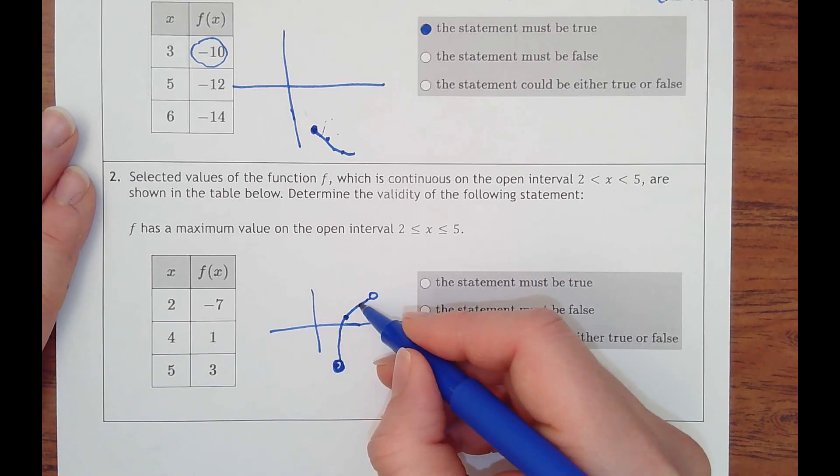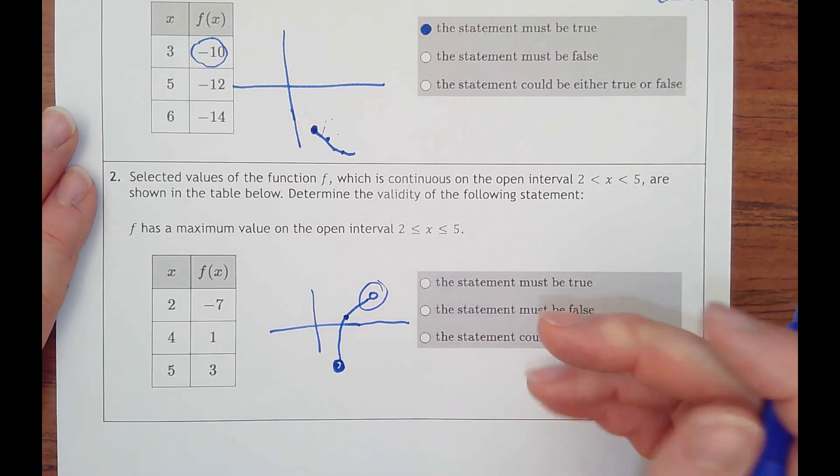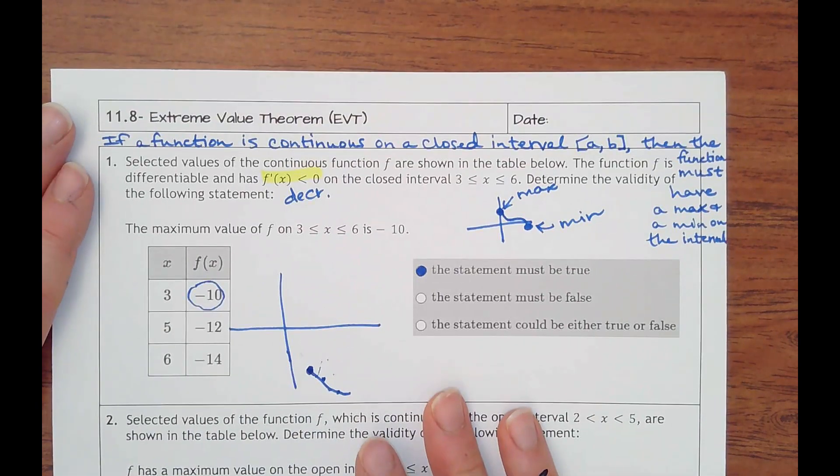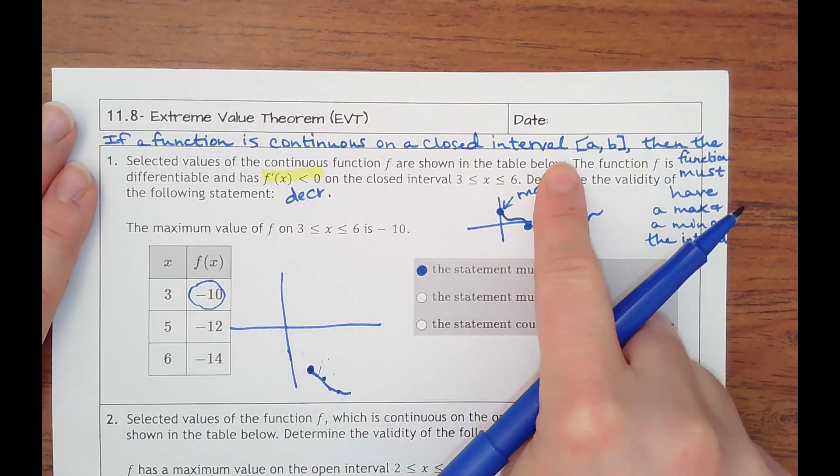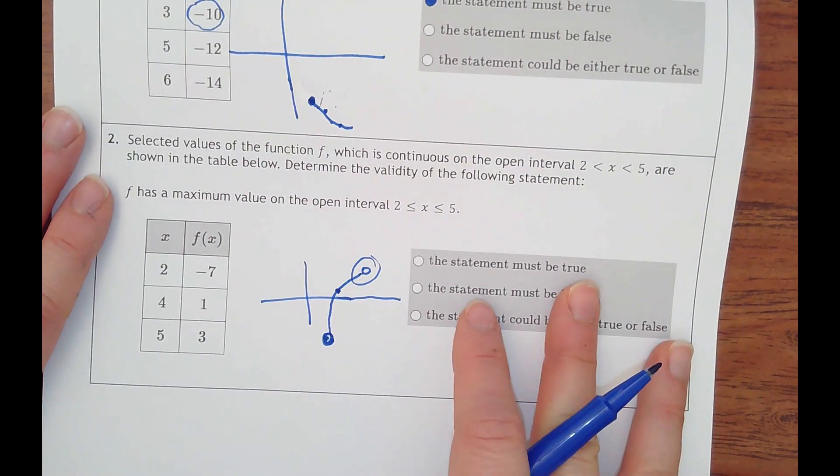I can't say that this is a max because it's an open circle. So it only works if it's continuous on a closed interval, including those end points.